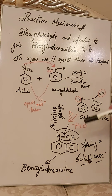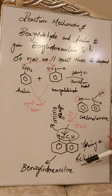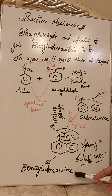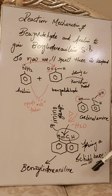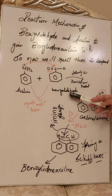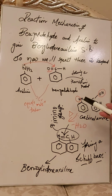As condensation proceeds, the water molecule is removed and the compound starts crystallizing. At that point you know the Schiff base — benzaldehyde aniline — has formed. This is how the reaction mechanism goes: reacting equal amounts of aniline and benzaldehyde in a condensation reaction to produce the Schiff base benzaldehyde aniline.